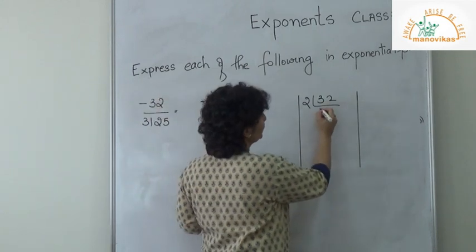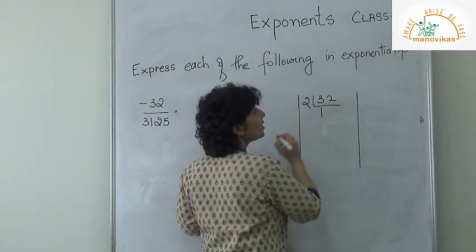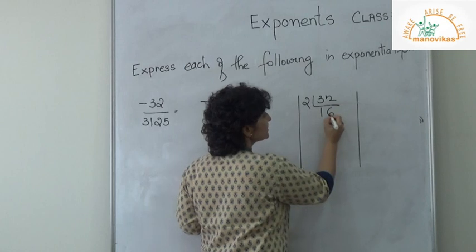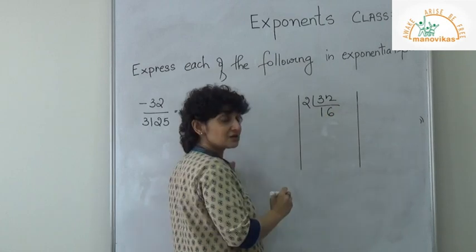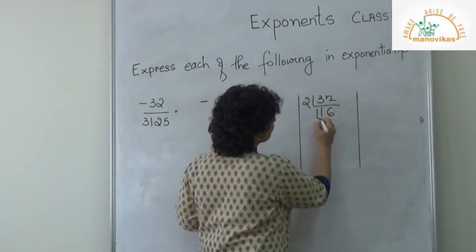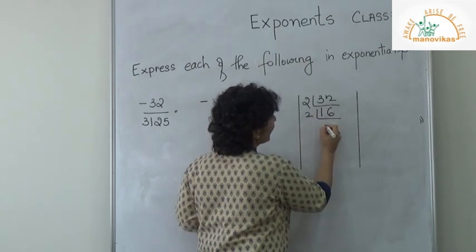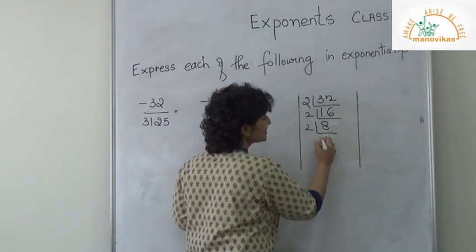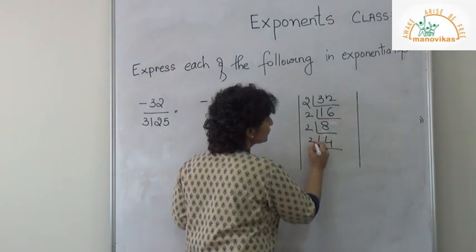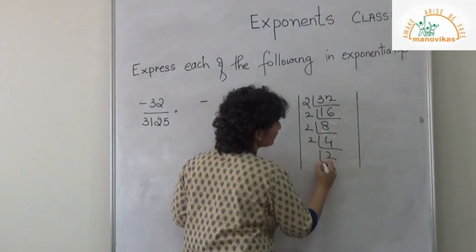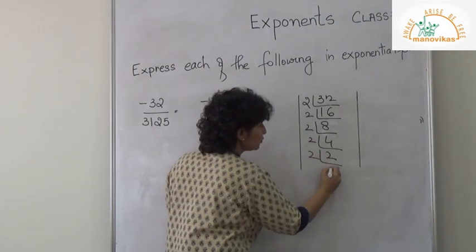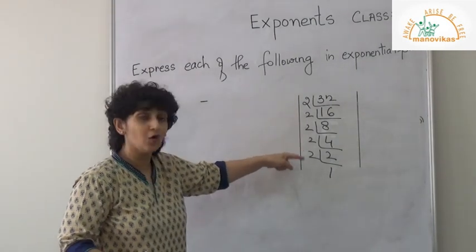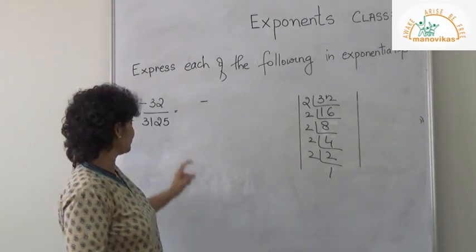So let me put the minus sign aside and work with 32. Dividing 32 by 2 repeatedly, I get 1, 2, 3, 4, 5 twos.